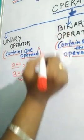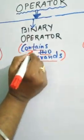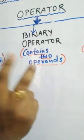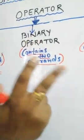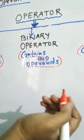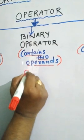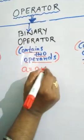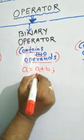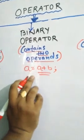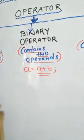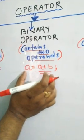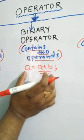A binary operator contains two operands — that means two variables. For example, if we write a equals a plus b, this is called binary because there are two variables: a and b.